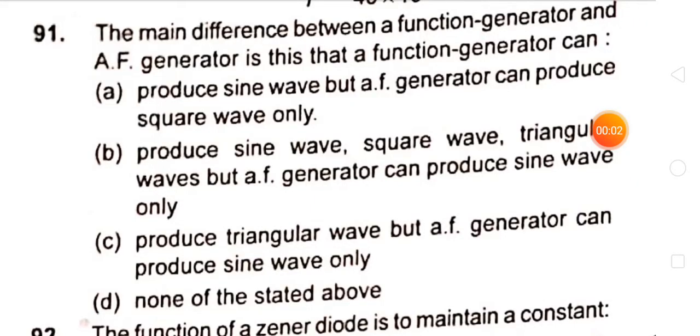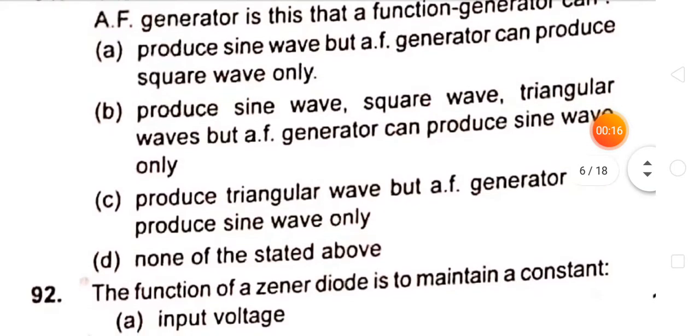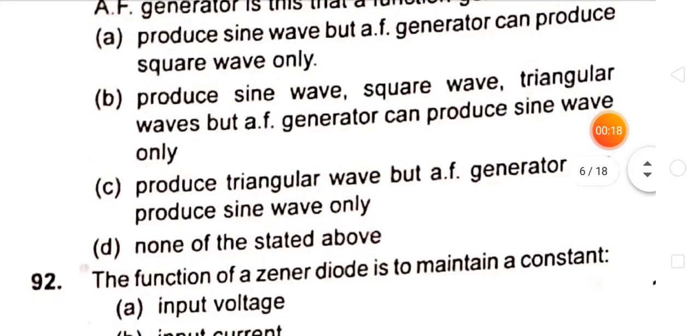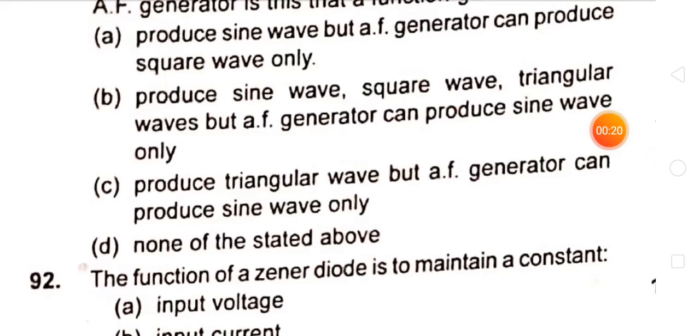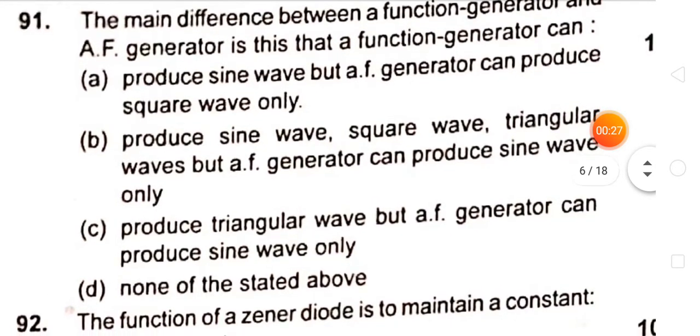The main difference between a function generator and an AF generator is that a function generator can produce sine wave, square wave, and triangular wave, but an AF generator can produce sine wave only.